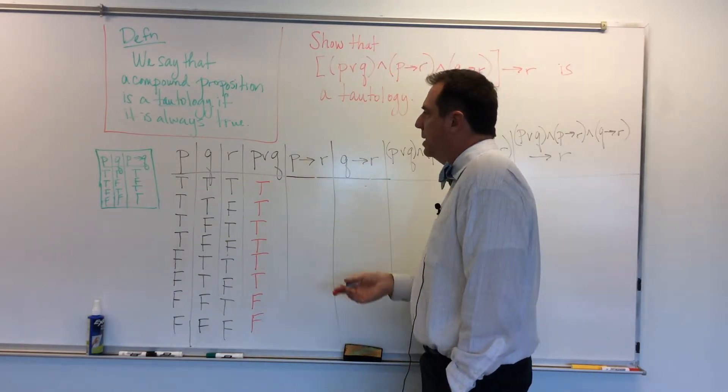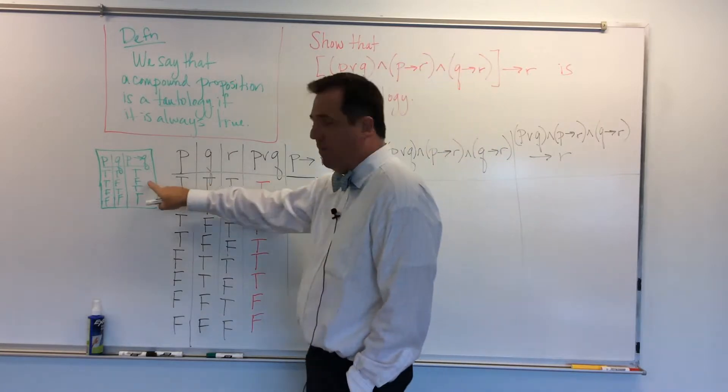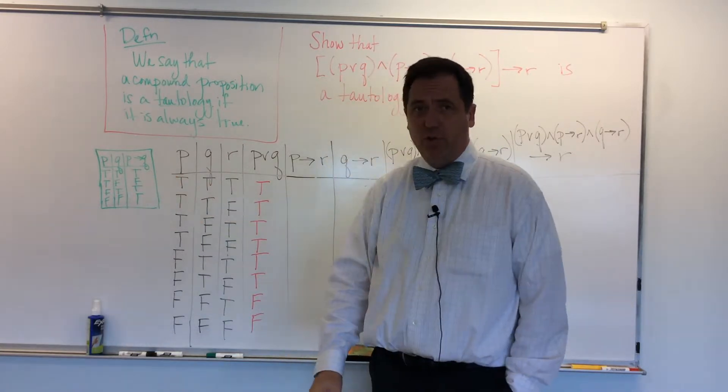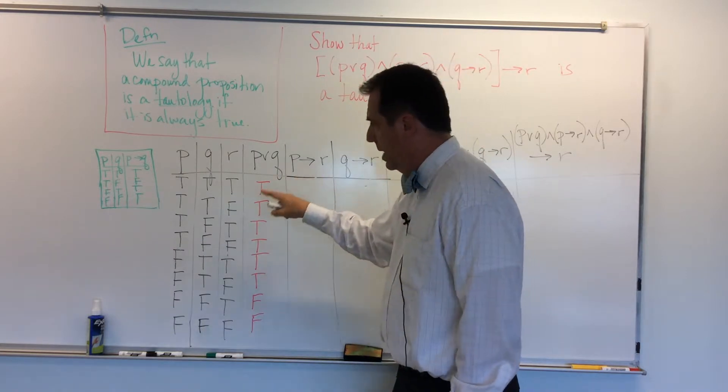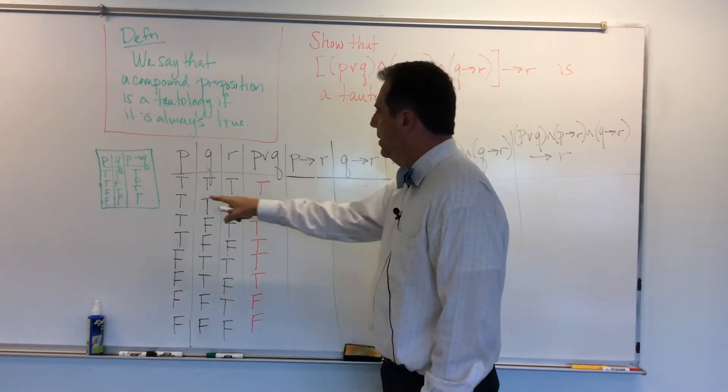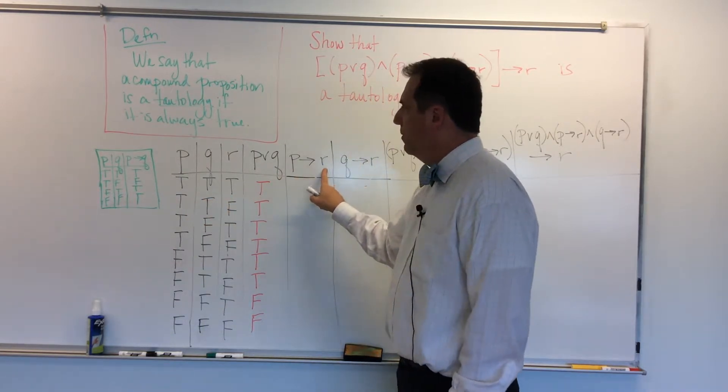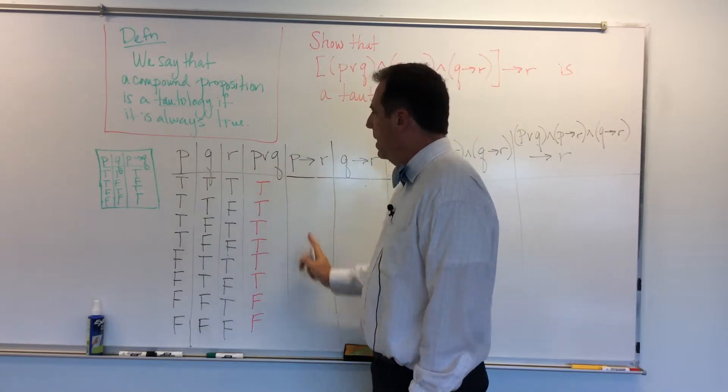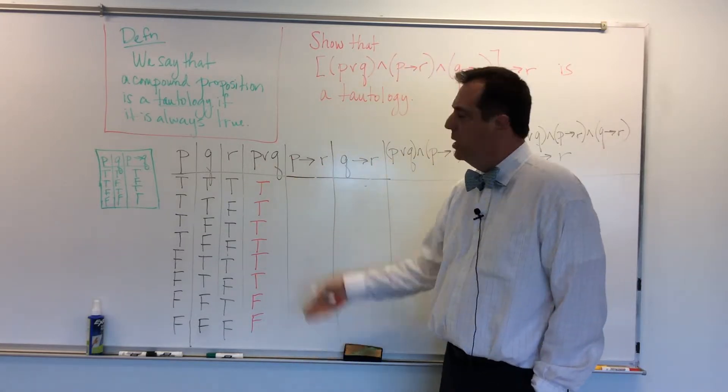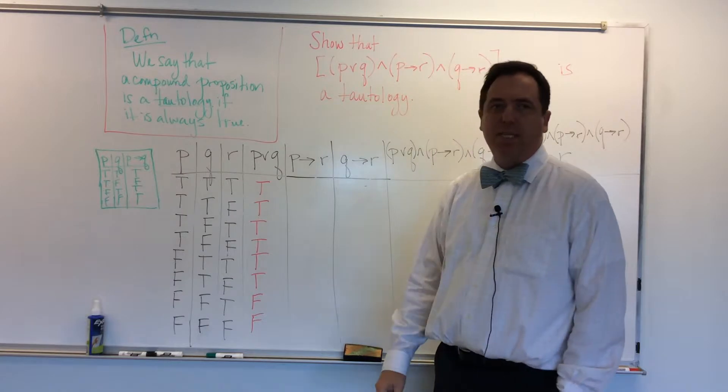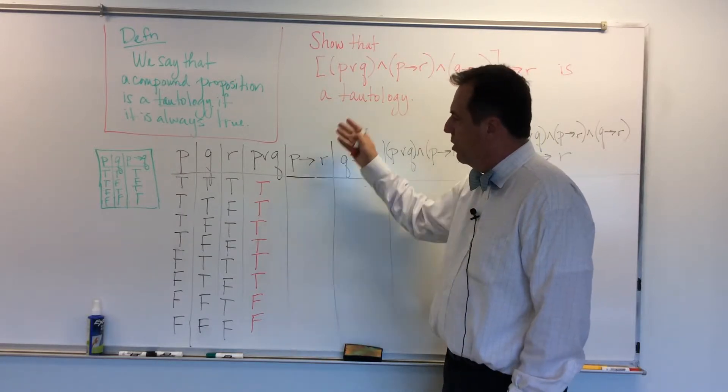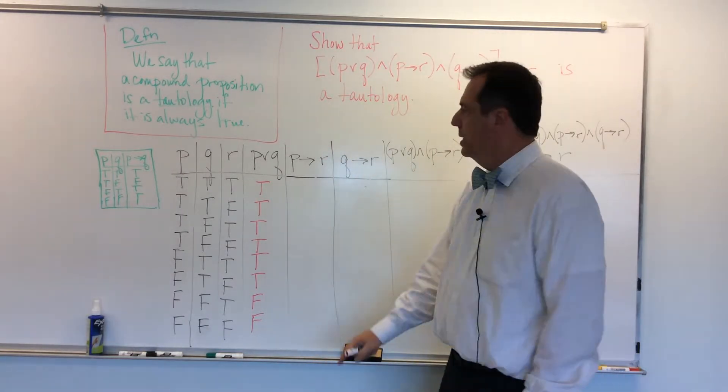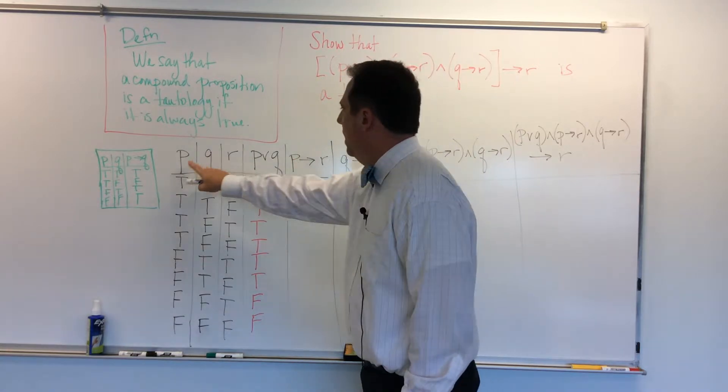So we're going to use that over here. And the way I always do this is I just look for that oddball first, and then fill in the rest with trues. So in this case, I want to find all the places where P is true and R is false. Those are the only places in this column that I'll have false.